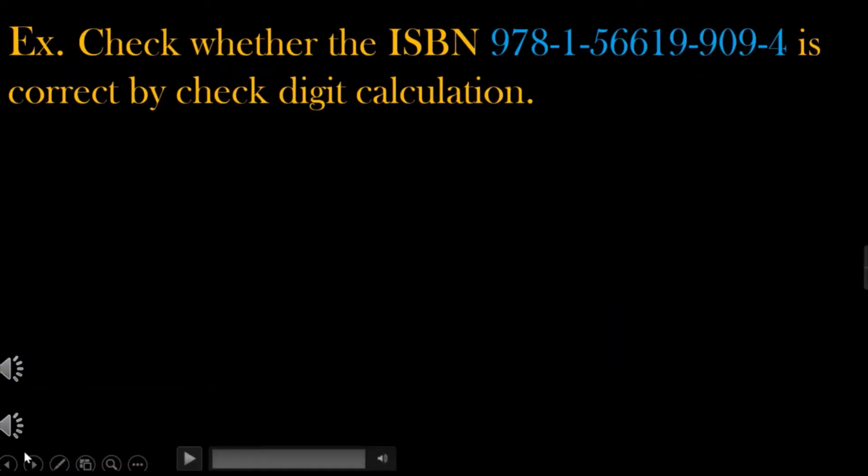Check whether the ISBN 978-1-56619-909-4 is correct by check digit calculation. To verify this, we still follow the same process. Observing the numbers of the ISBN code, the odd numbers are 9, 8, 5, 6, 9, and 0. Moreover, the even digits are 7, 1, 6, 1, 9, and 9.